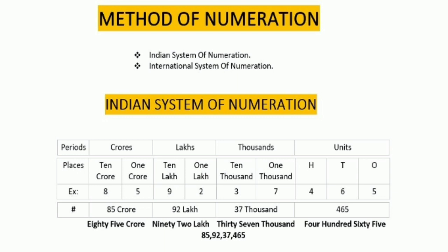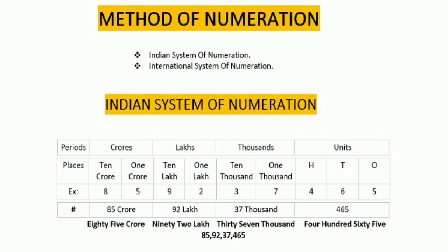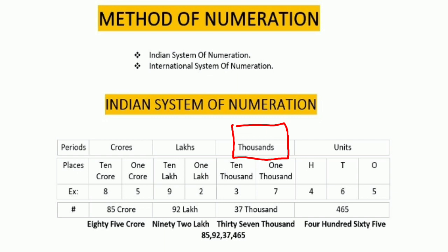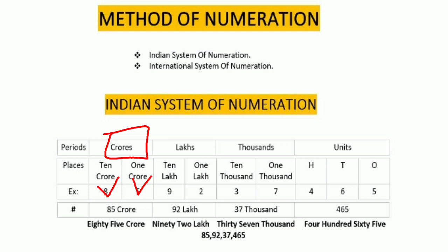First we will see the Indian system of numeration, which is generally used in India. In this system there are four periods: crore, lakh, thousands, and units. These periods are subdivided into places. The units period is divided into three places: hundreds, tens, and ones. The thousands period is divided into two places: ten-thousands and thousands. The lakhs period is divided into two places: lakhs and ten-lakhs. The crore period is divided into two places: crore and ten-crore.